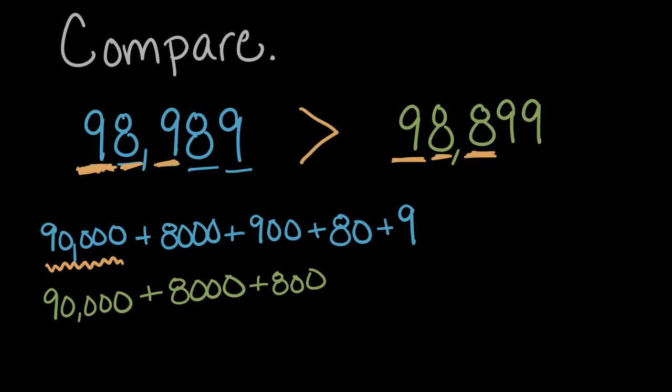And this is our greater than symbol because we want the open side to be facing the larger number. So we'd read this as 98,989 is greater than 98,899.